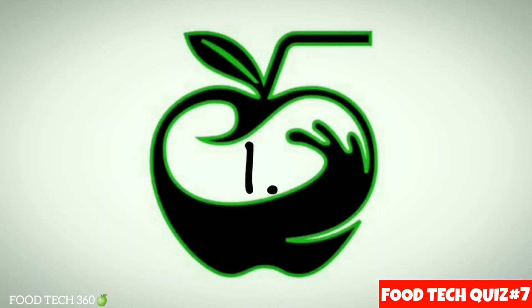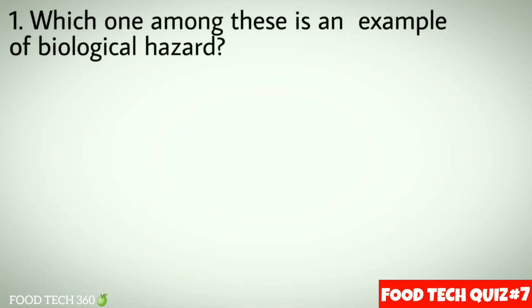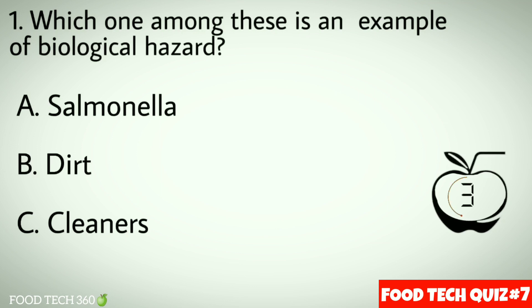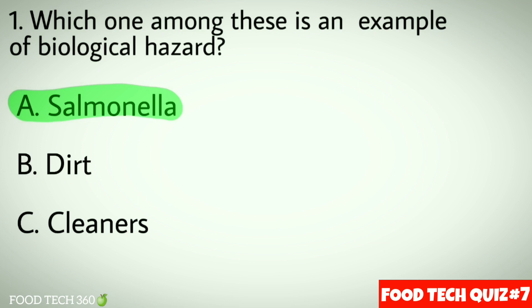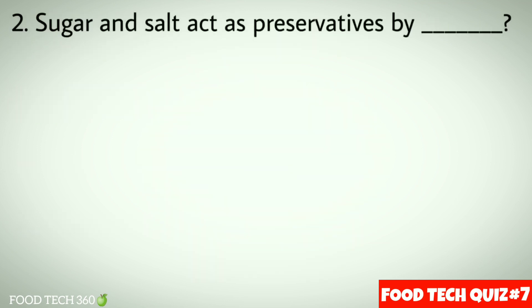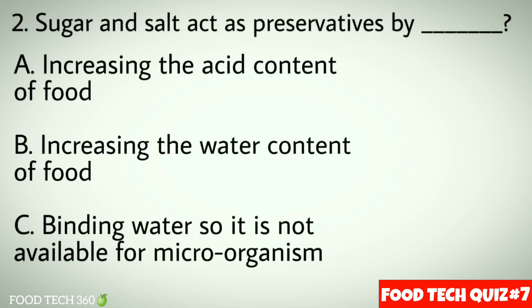Question number 1: Which of these is an example of a biological hazard? Options: a) Salmonella, b) Dirt, c) Cleaners. Correct answer: a) Salmonella. Question number 2: Sugar and salt act as preservatives by — options: a) Increasing the acid content of food, b) Increasing the water content of food, c) Binding water so it is not available for microorganisms.